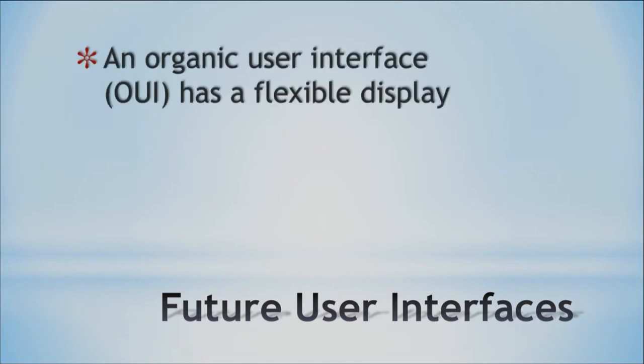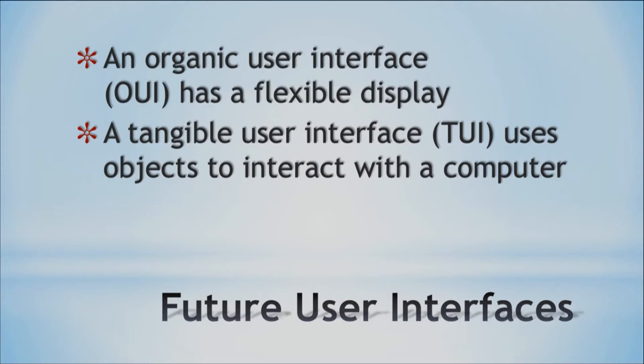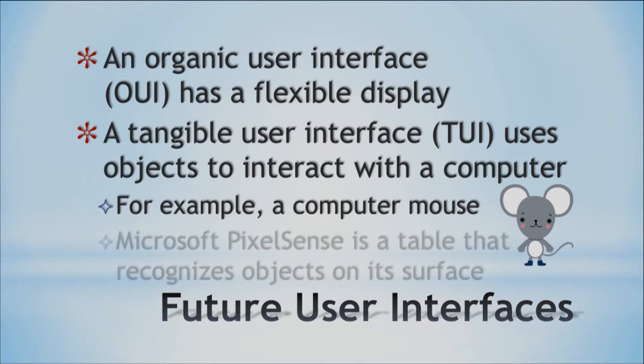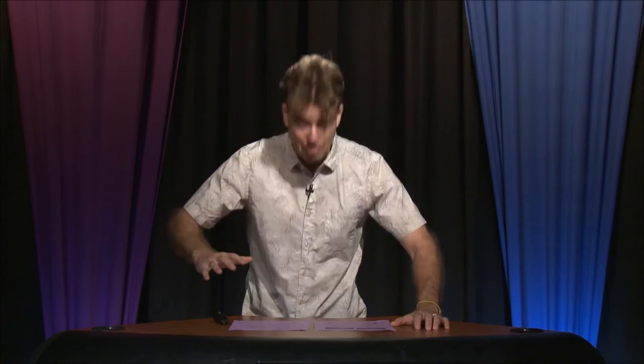We also have organic user interfaces — OUI — which involve flexible displays. And tangible user interfaces — TUI — use physical objects to interact with a computer. One that's been around a while is the computer mouse. More recently there's PixelSense, a big table where you put things on it and it recognizes what's there. You put a camera there and it downloads your photos and you move them around the table. All these interfaces have pluses and minuses — moving around a table sounds cool, but you might get neck pain, or the table gets dirty. Everything's going to have some kind of drawback.